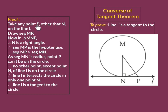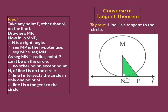We take a point P other than N on line L, and we have to prove that point P does not lie on the circle — then line L will be the tangent. Now draw segment MP. By drawing segment MP we get triangle MNP, which is a right-angle triangle, since MN is perpendicular to line L. Hence angle MNP is a right angle, and therefore triangle MNP is a right-angle triangle.